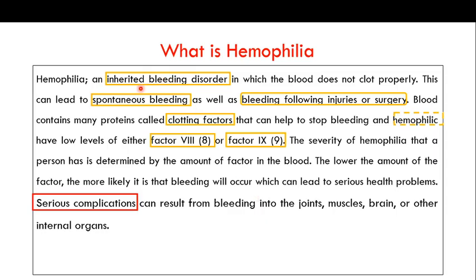So what is hemophilia? Hemophilia is an inherited bleeding disorder — it is transferred from one generation to another. This is a bleeding disorder in which the blood does not clot properly, which can lead to spontaneous bleeding as well as bleeding following injuries or surgeries. The blood contains many proteins known as clotting factors, which help to stop bleeding. Hemophilic individuals have a deficiency of these clotting factors, or they are totally missing.